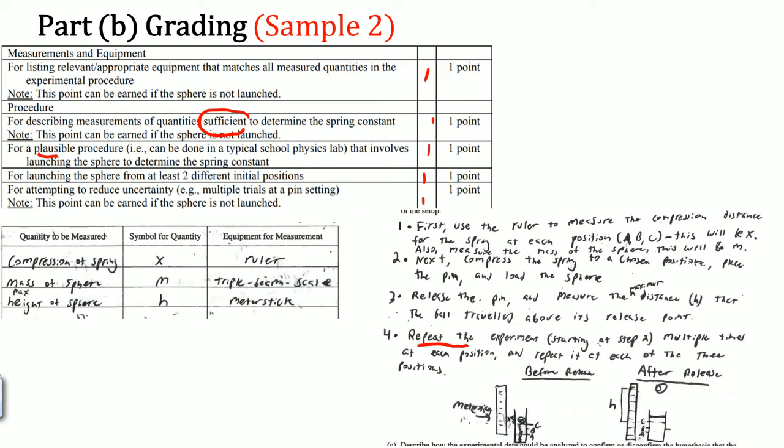One thing to note: the diagram isn't required but helps the grader understand your process. It is better to list steps as step one, step two, step three, etc., because when you reach the repeating-experiment part you can simply say 'repeat the experiment starting at step blank to reduce error.' As long as you write that step, you should earn the last point for attempting to reduce uncertainty.